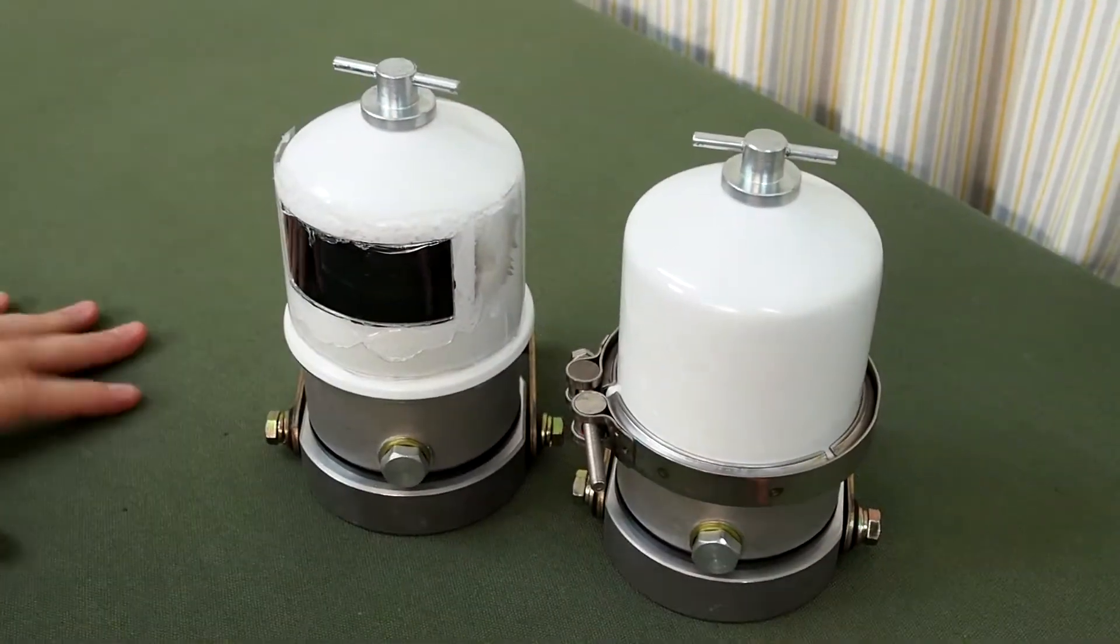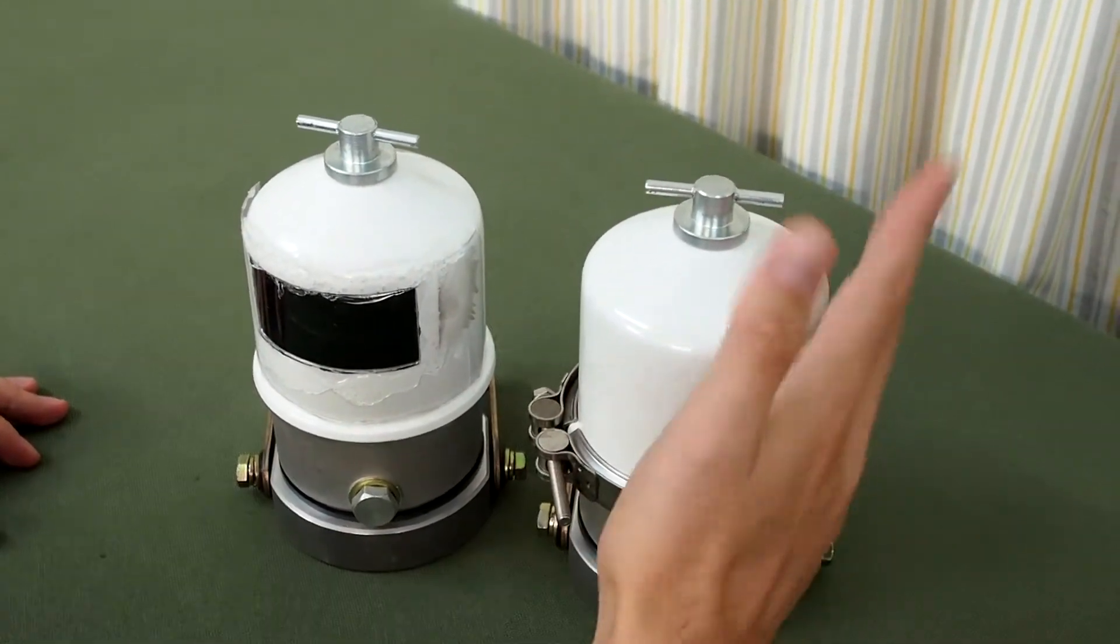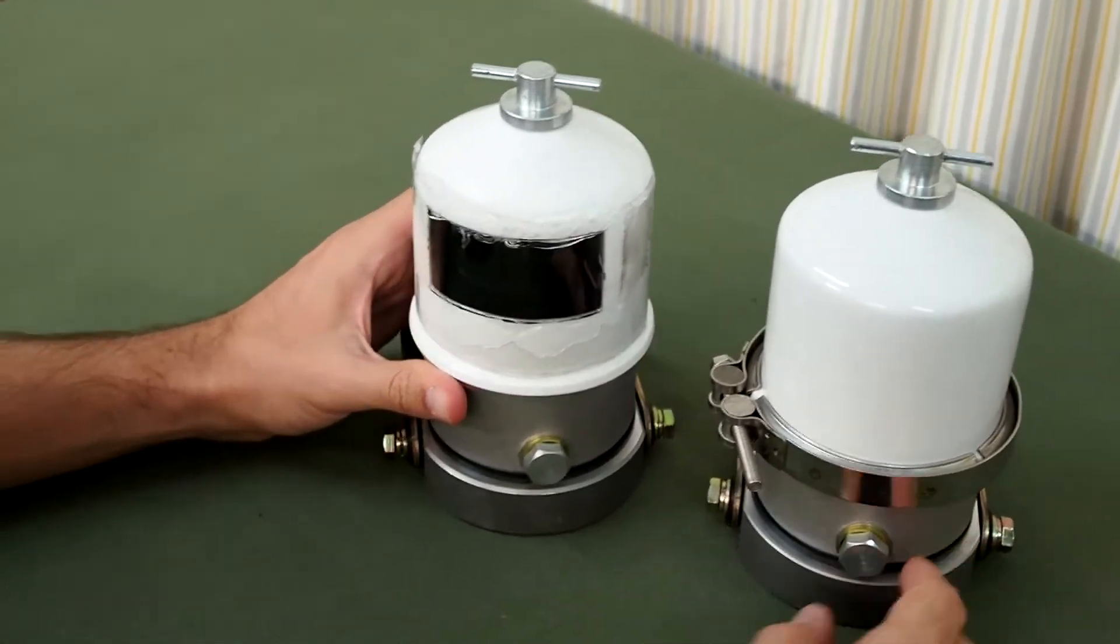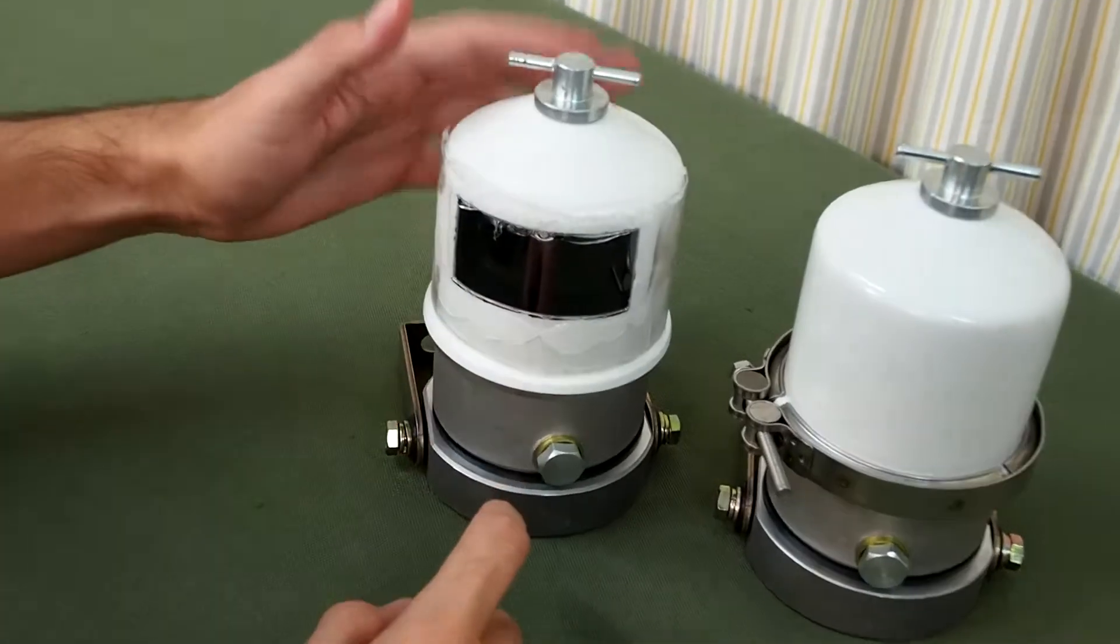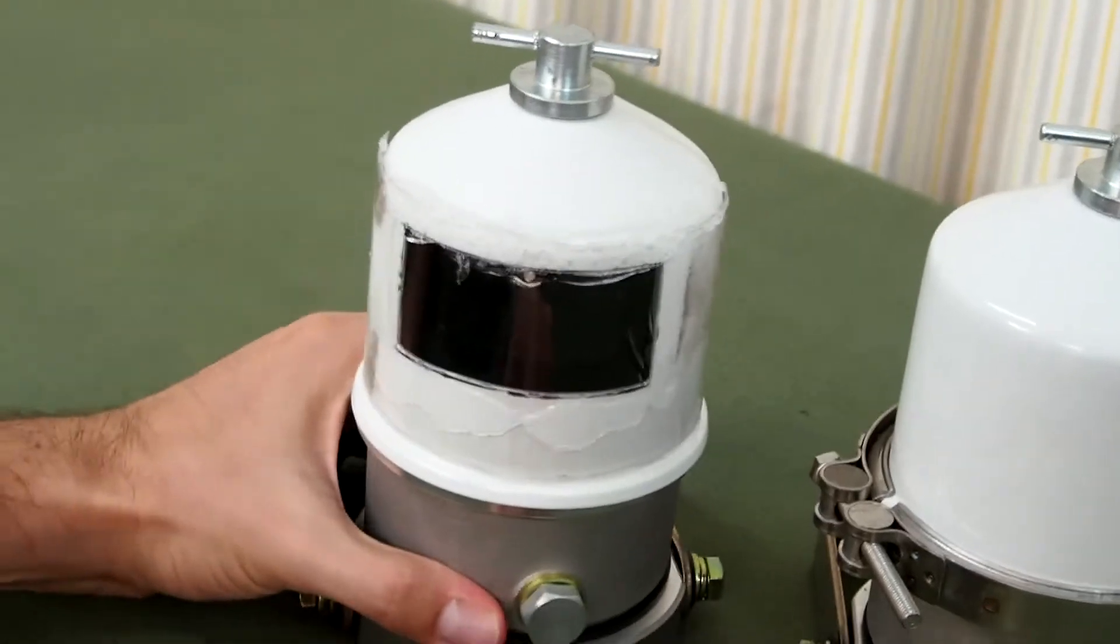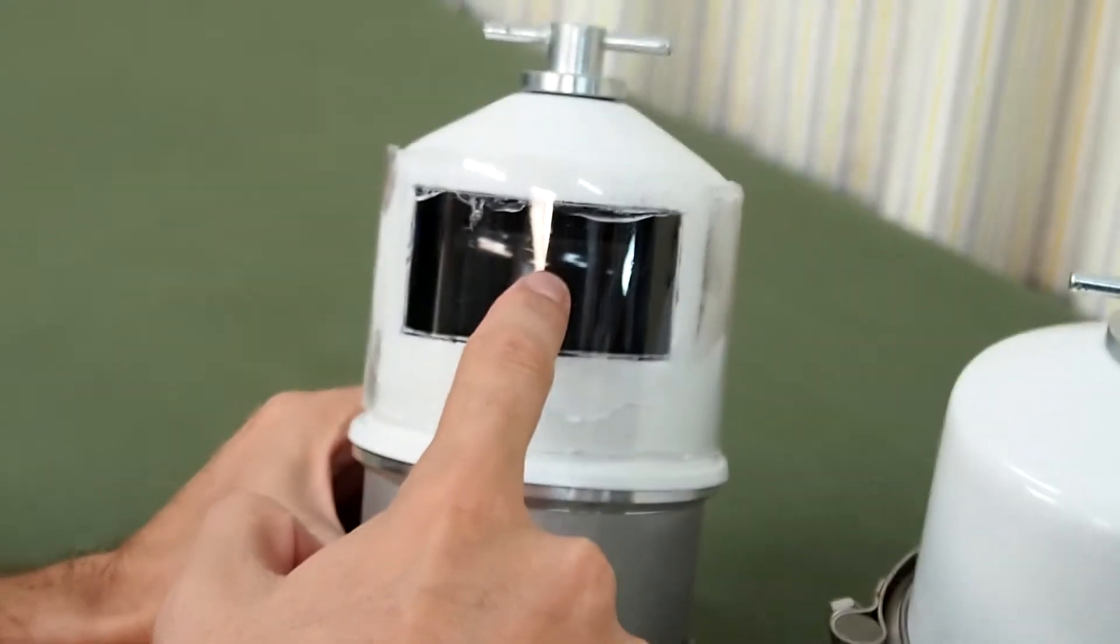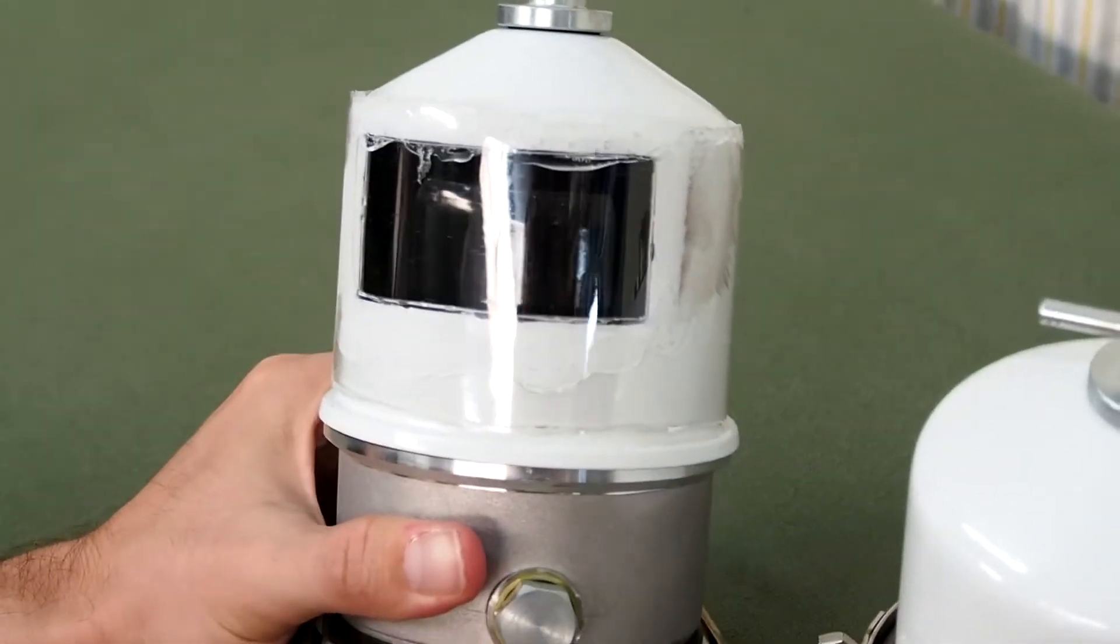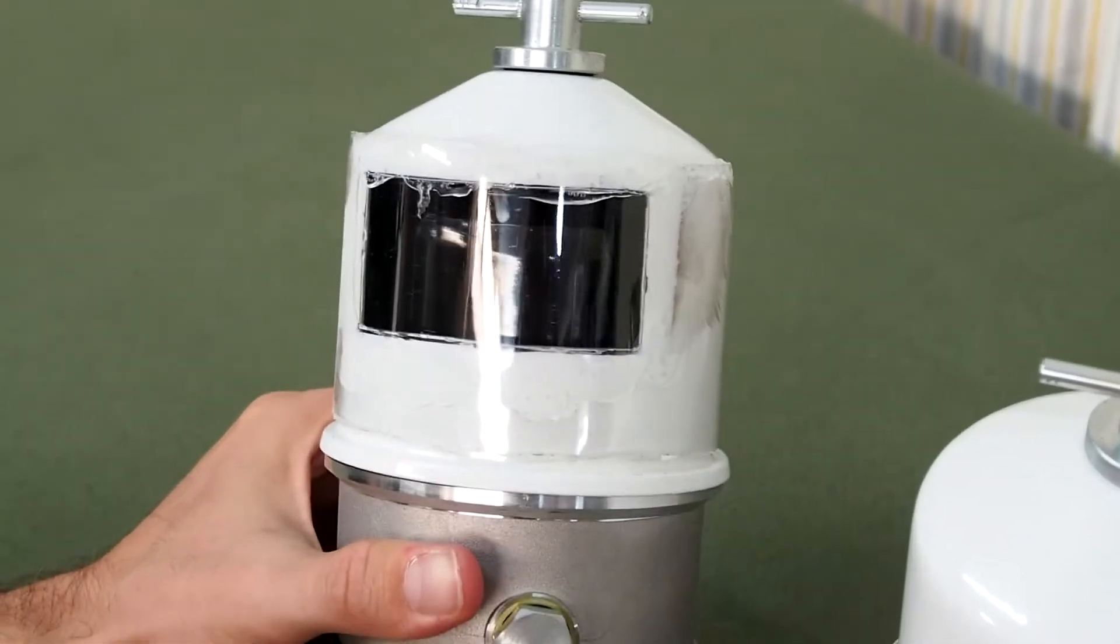So you see here I've got two of the centrifuges. This one is stock standard, it's had nothing done to it. On this one I've modified by cutting a window into the centrifuge cover here. This is just a steel cover. I'm not sure if you can see in here, but this is just a polyethylene plastic cover. Inside here is the actual centrifuge canister itself that spins.